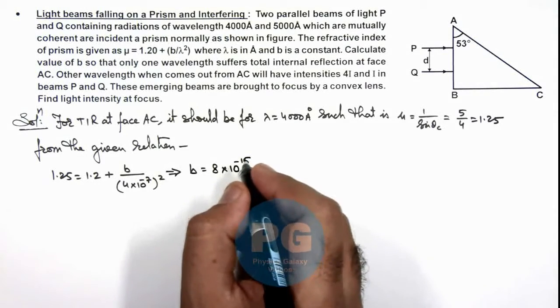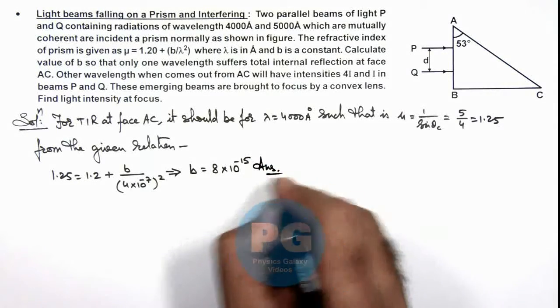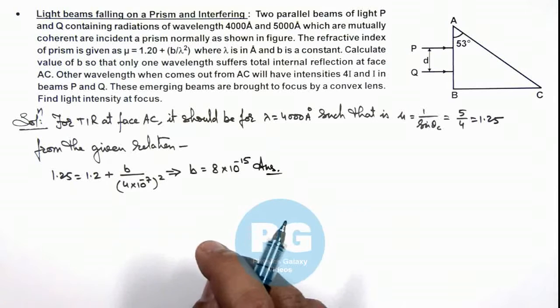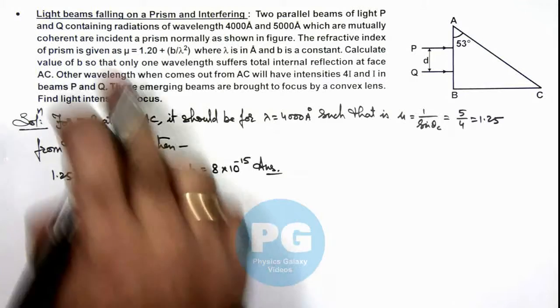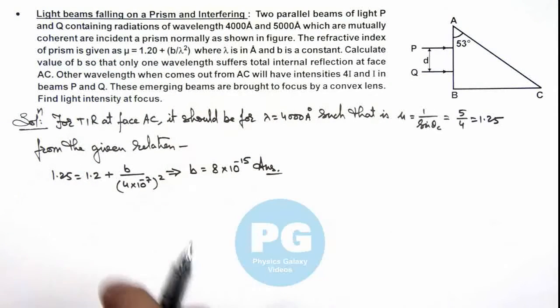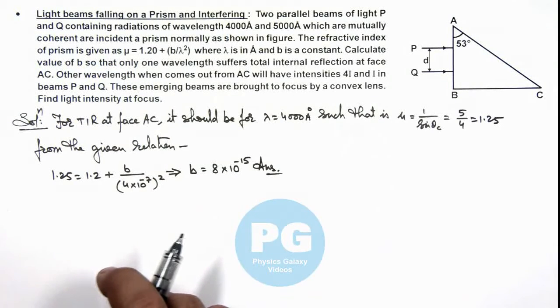So that is the result for the constant b which we are required to evaluate. And in this situation, as we have got the value of b, we get the value of refractive index for all these waves.